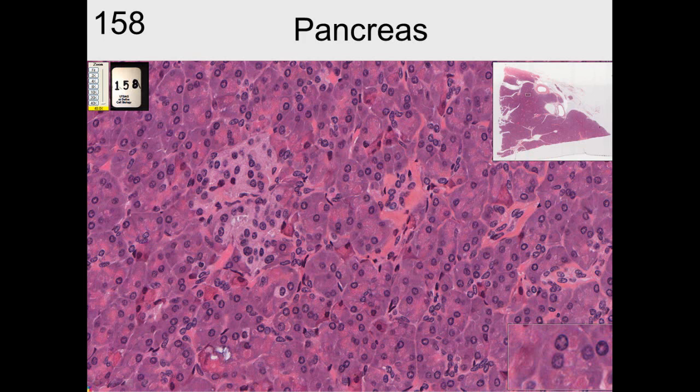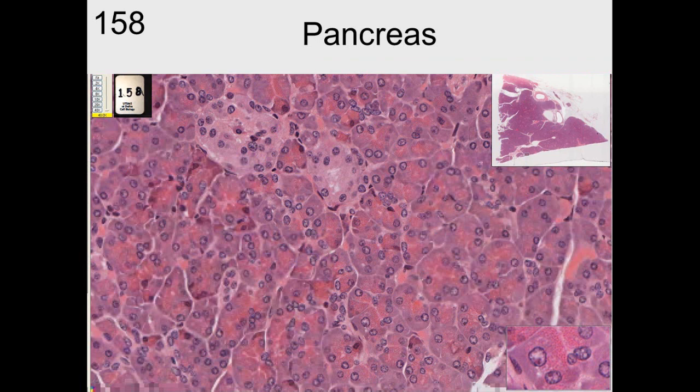And each one of those grapes is composed of a cell with a nucleus that's in the center. And we can see the light staining material, which is really the islets of Langerhans. Again, you can see the islets of Langerhans.